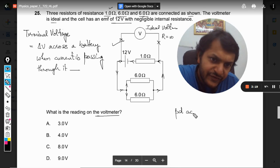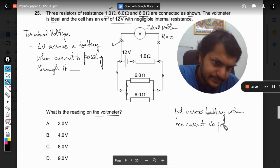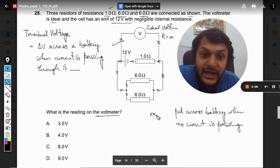Now if the current is not passing through it, so I will say that the potential difference across battery when no current is passing through it is known as EMF.